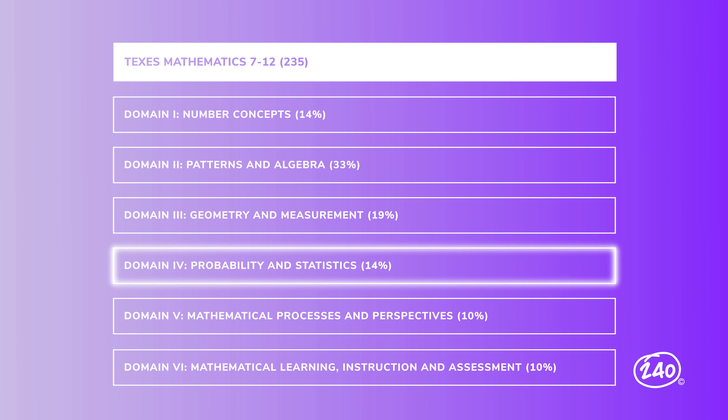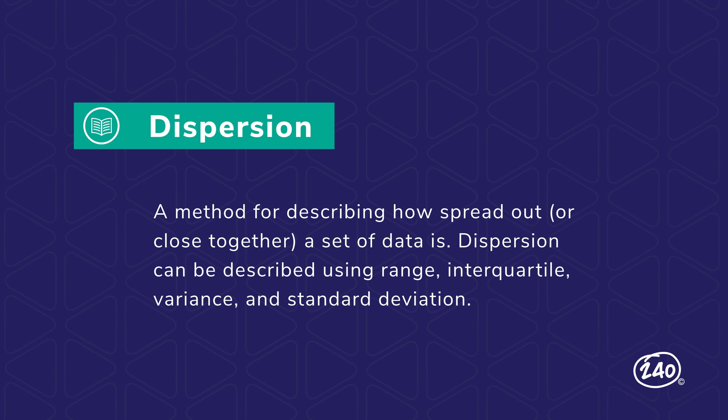We've made it through the first half of our mathematical tour. From here on out, our domains get a bit smaller. Let's move on to probability and statistics, which also includes their applications and technology appropriate to teach the statewide curriculum. We're back down to three competencies in this section. Let's start with a definition. Dispersion is a method for describing how spread out or close together a set of data is. Dispersion can be described using range, interquartile range, variance, and standard deviation.